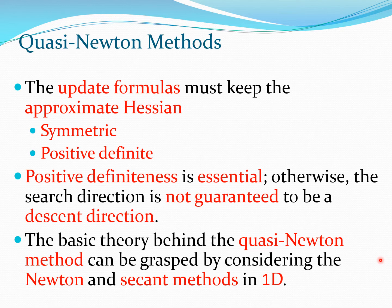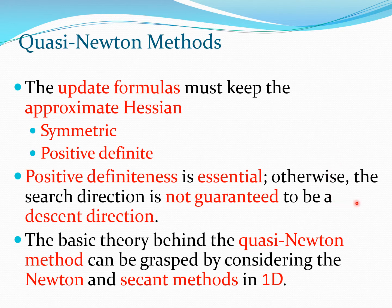Whenever you create an update formula to approximate the H matrix, you must ensure that the H matrix remains symmetric and positive definite. Symmetry comes from the basic nature of the H matrix due to partial derivative information. Positive definiteness is required to maintain that the descent direction satisfies the search condition — without positive definiteness, the search direction is not guaranteed to be a descent direction, meaning c dot d is less than 0.